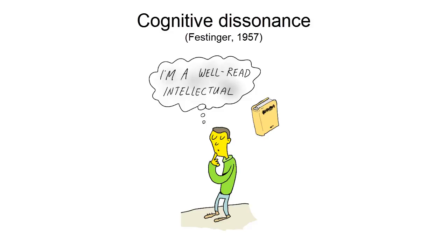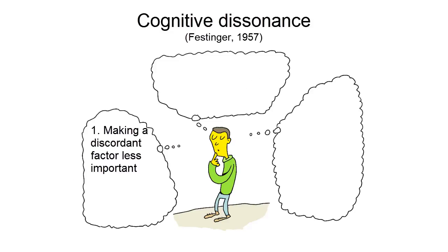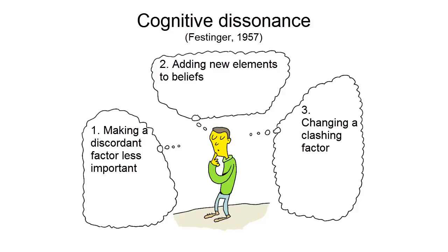The theory predicts that Roger will try to avoid the discomfort of his cognitive dissonance, and he can do this in three ways. First of all, by making one of the discordant factors less important. Secondly, by adding new elements to his beliefs that make the picture fit — in other words, create consonants. And thirdly, and finally, by changing one of the clashing factors.